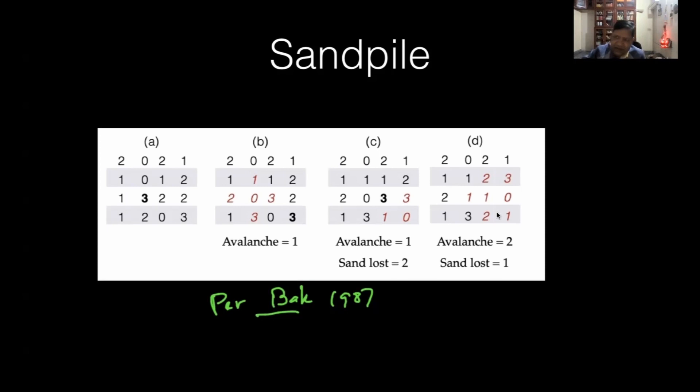Now randomly drop a sand in this grid. If I drop a sand here, the number of sand particles increases. So if I drop here it becomes one to two, this becomes two. I drop here, it becomes three.